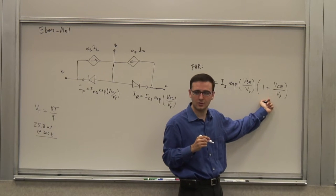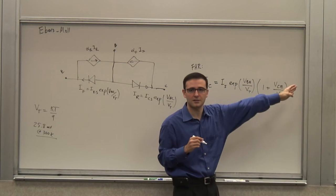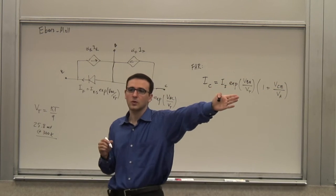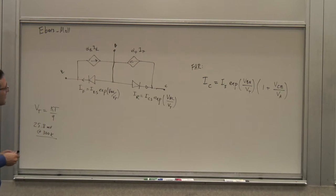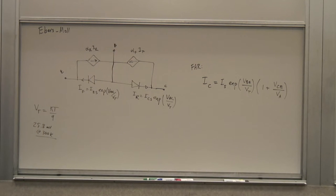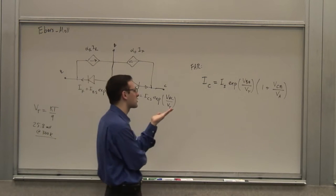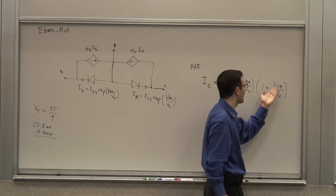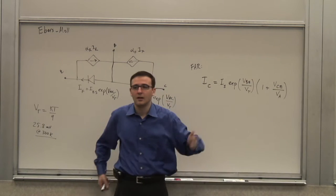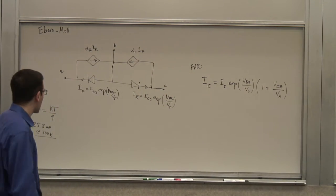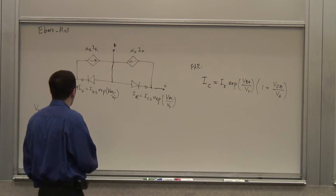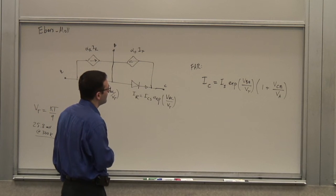Looking at this expression, it's the first term of a Taylor series expansion. But for all practical purposes, in many cases we actually linearize this model — even the first part. So if you are going to linearize it sooner or later, you might as well keep only the first term of the Taylor series expansion. That was the expression in the forward active region.